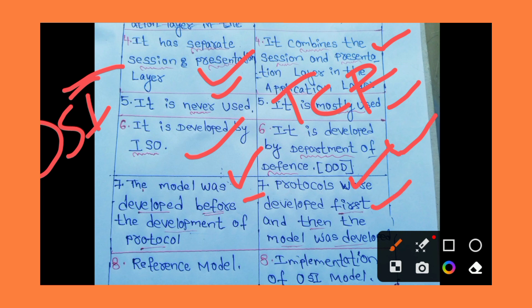For TCP/IP, protocols such as HTTP, FTP, SMTP, ARP, RARP, DHCP, and DNS were developed first. Then the TCP/IP model was designed. So for OSI, the model was designed before the protocols; for TCP/IP, protocols were developed first and then the model was designed.